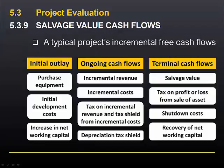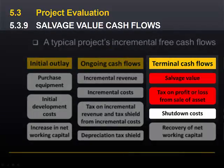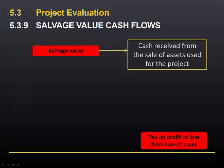In this module and the next we'll look at the remaining terminal cash flows. In this module we're looking at the salvage value and the tax on any profit or loss from the sale of an asset. Salvage value is the term we give to cash received from the sale of any assets that are used in the project. That is clearly a cash flow and is recorded as such in our NPV analysis. However, we still need to deal with the tax, if any, associated with that sale.